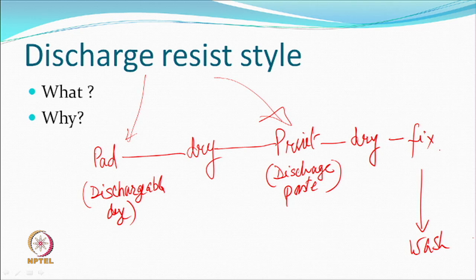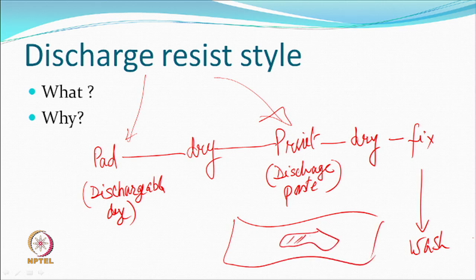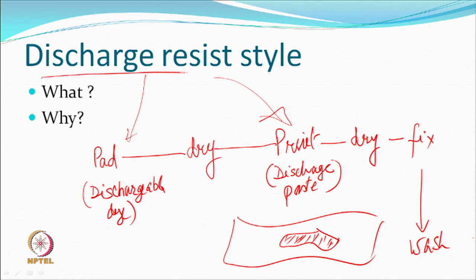Even if there is colour at the point where paste has been placed — that is the design area — the dye is going to be discharged before it has been fixed. So that is how people have handled the difficulty with polyester: they do not allow the dye to diffuse at all. During the fixation process, the dye in the printed area will get discharged and become a different product, which can then be washed off. This is called the discharge resist style of printing — an interesting style combining both principles.